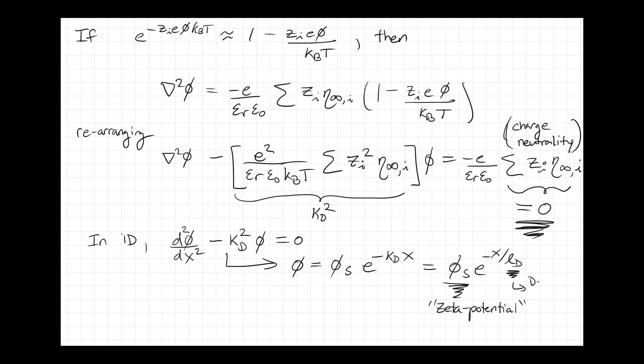And the quantity L_D is called the Debye screening length, which is an extremely important quantity for lots of different types of physics, not just charged double layers.